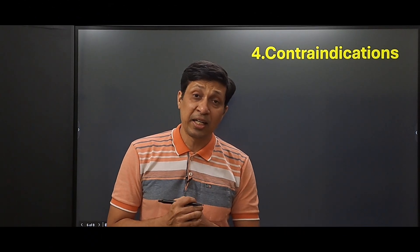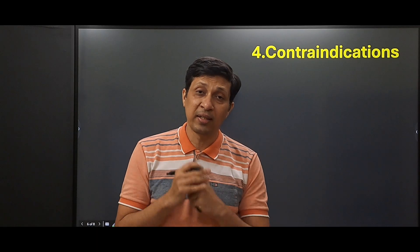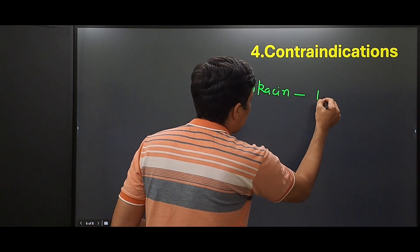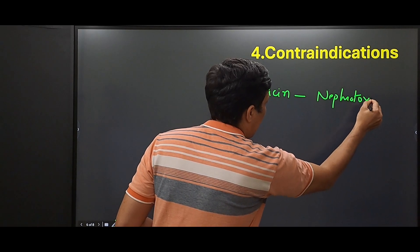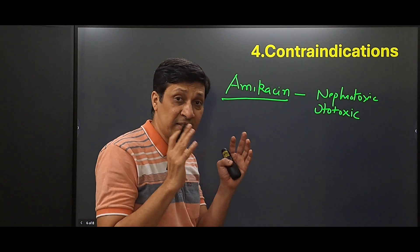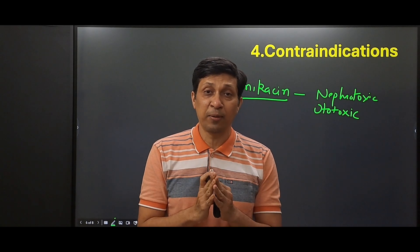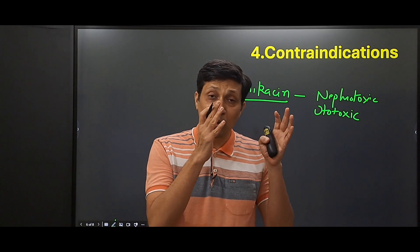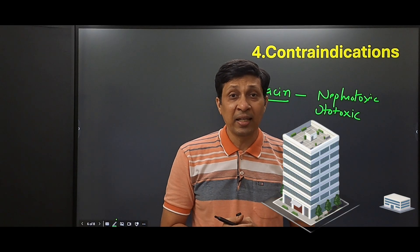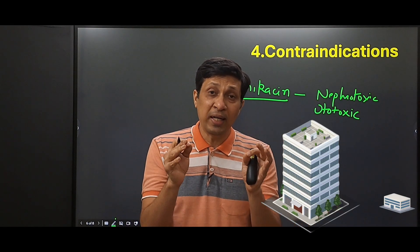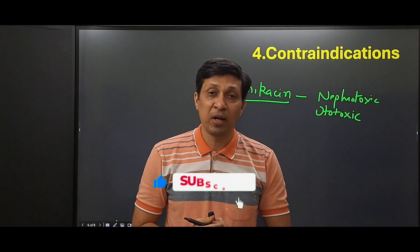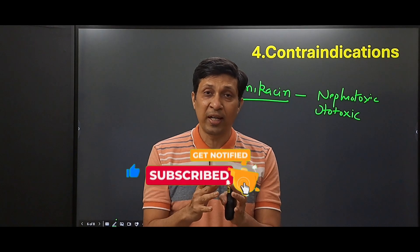The fourth principle is to check whether there is any contraindication to the antibiotic you have chosen. For example, amikacin is both nephrotoxic and ototoxic, so if a patient has renal disease, there is a contraindication and you cannot use it. This is like choosing a missile that will pinpoint only the target building while saving an important asset nearby. Always check for contraindications before prescribing.